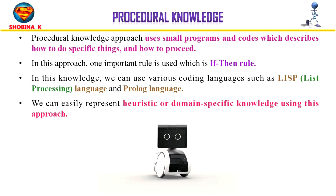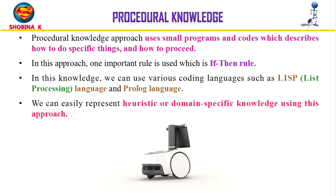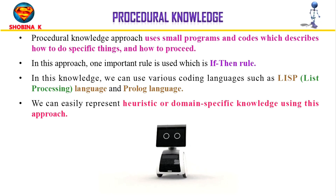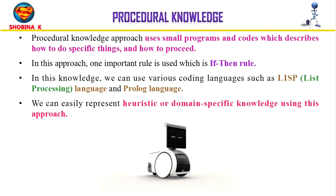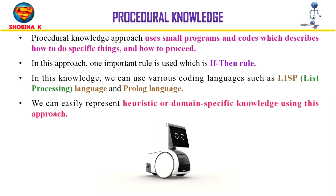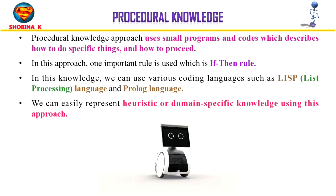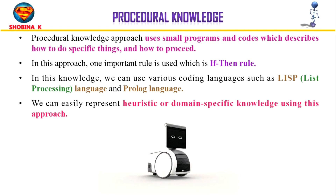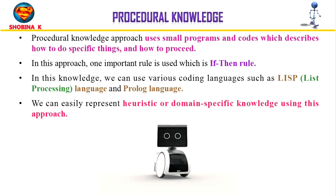The final approach is procedural knowledge, which uses small programs and code describing how to do specific things and how to proceed. The most important rule used in this approach is the if-then rule. Various coding languages such as Lisp and Prolog can be used. Using this approach, you can easily represent heuristic or domain-specific knowledge. A well-known example is the Procedural Reasoning System (PRS), where a mobile robot is given specific instructions on navigation or actionable steps about pathways.